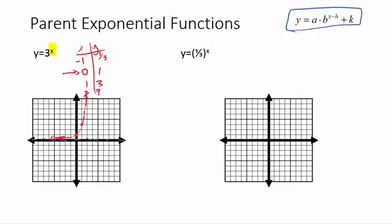You can put whatever base you want in here — it could be a 2 or a 5, it doesn't really matter. We can even put a fraction, and fractions look a little different. When our B value — the base — is between 0 and 1, meaning a fraction bigger than 0 but less than 1, our graph is going to go down from left to right. We call that exponential decay. Whereas when the base is bigger than 1, it goes up from left to right — exponential growth.